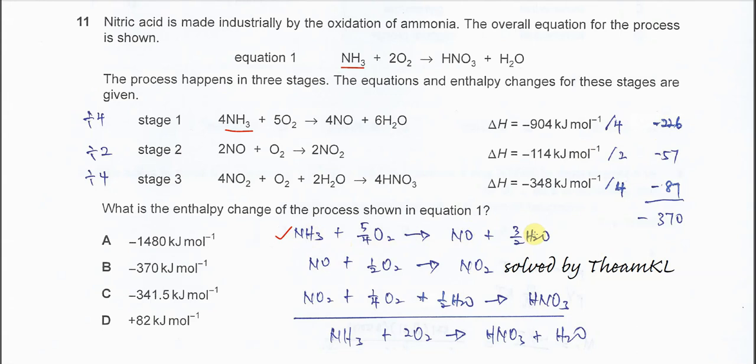The second thing we need to look at is stage 3, because nitric acid is the product. In stage 3, nitric acid is 4 moles but in the overall equation it's just 1 mole. So we need to divide by 4. After stage 3 is divided by 4, nitric acid becomes 1 mole. Delta H also needs to divide by 4, so it becomes negative 87.